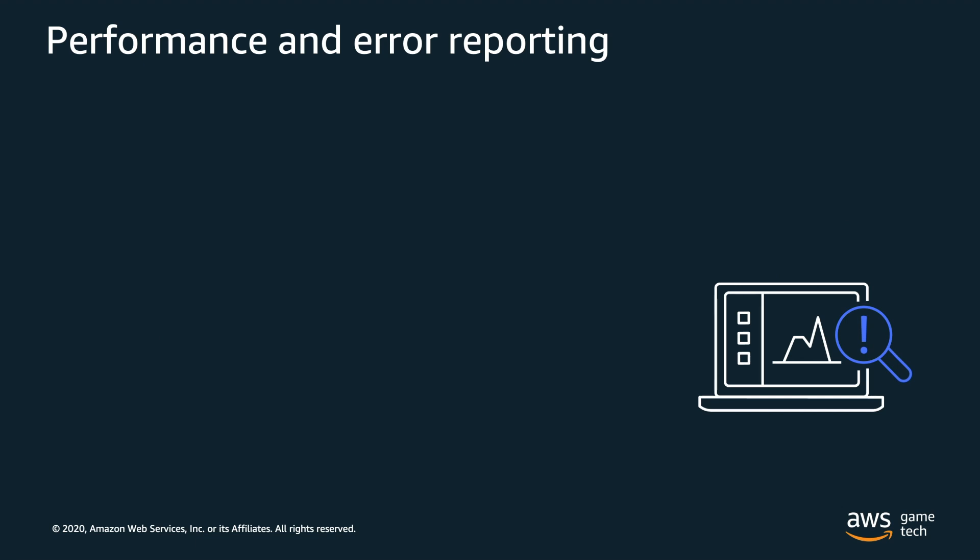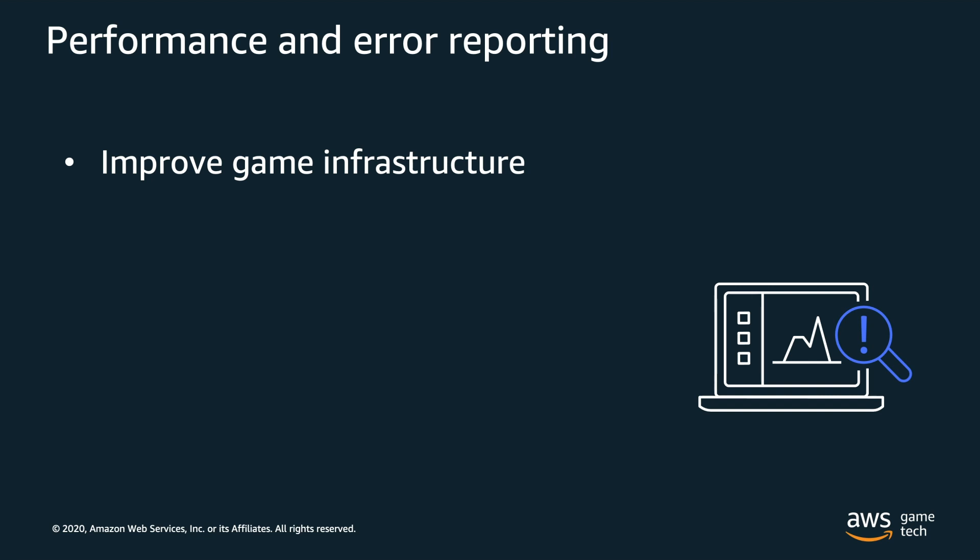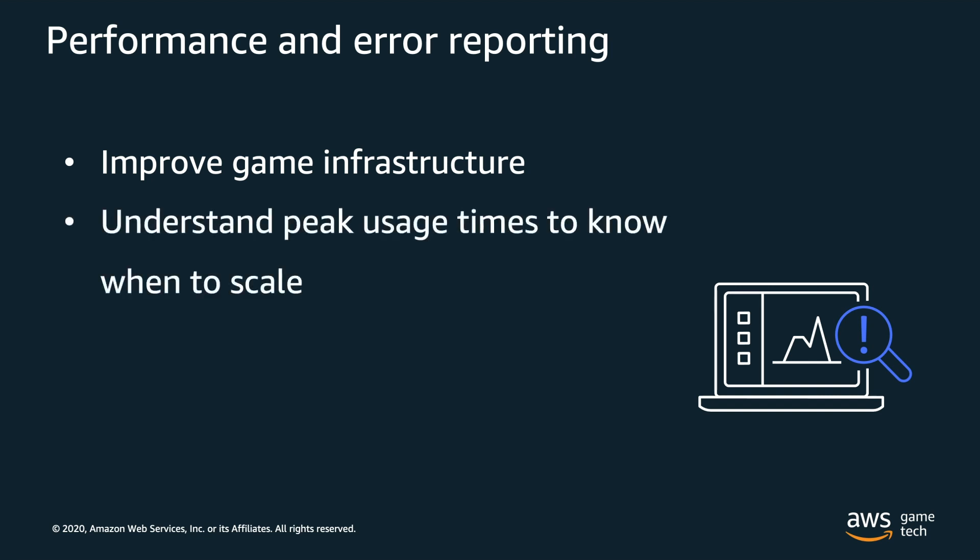Finally, you can use analytics to monitor performance and error reporting. This can help you improve your game infrastructure by understanding important metrics like CPU and memory utilization, so you know when your peak usage times are and can scale your infrastructure accordingly. You can also measure latency — if you're developing a latency-sensitive game like a first-person shooter, you'll want to measure the latency your end players are experiencing. You can also analyze error trends, for example by having logs streaming from your application to proactively detect and prevent any errors.